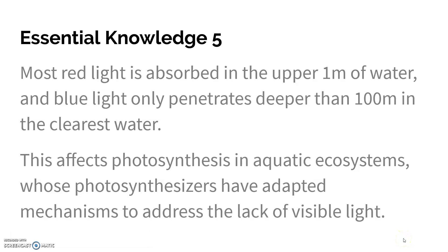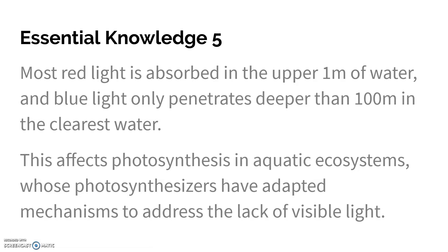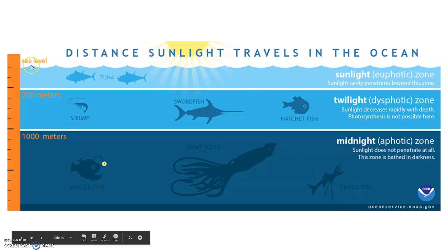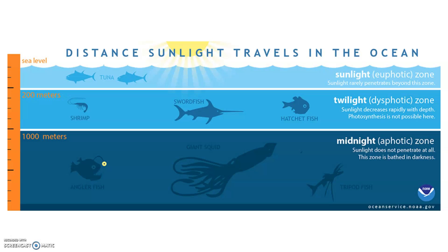The distance light travels affects how much energy can be produced and how productive an ecosystem can be. Most red light is absorbed in the upper meter of water, and blue light can only penetrate 100 meters, but only in the clearest water — assuming there's no sediment floating around. This affects photosynthesis in aquatic ecosystems, so you're going to have more photosynthesis happening at the surface than further below. Organisms down deeper have to adapt to much different ways of getting their energy.